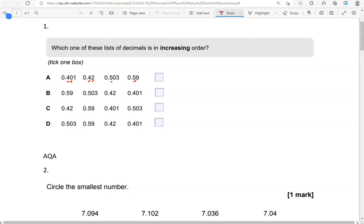So we're looking for a row that starts with 0.401. That is A, and that's the only one that we've got that starts with this number.